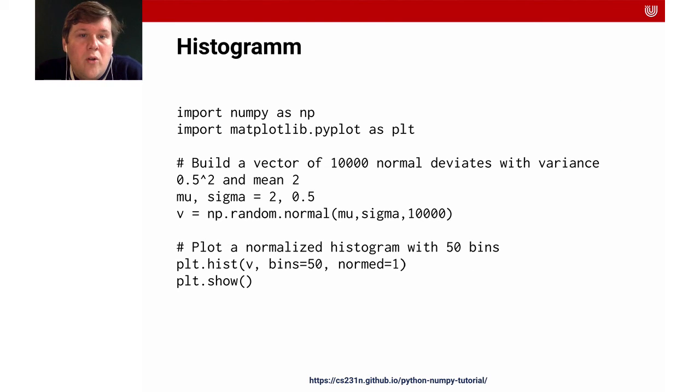We can also use this to plot histograms. Here we just generate a bunch of random numbers. We build a vector of 10,000 normal deviates with a variance of 0.2 squared and a mean of 2 so our mu is 2 and our sigma is 0.5. We take these random numbers in an array called v and then we put this v into the function plot.hist for histogram. We get a normalized histogram of all the different values. We can set the number of bins of the histogram and we can also decide whether the histogram is normalized to the values from 0 to 1 or whether we want the actual values.